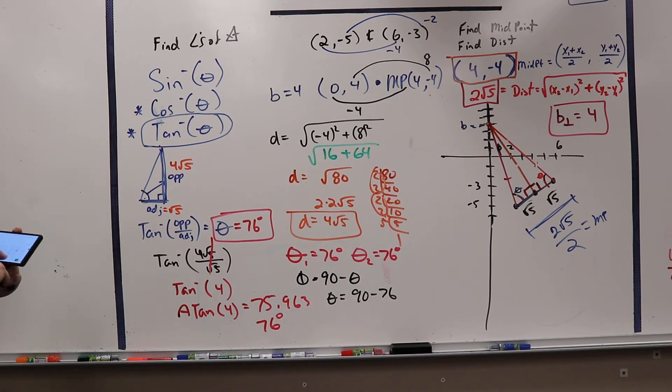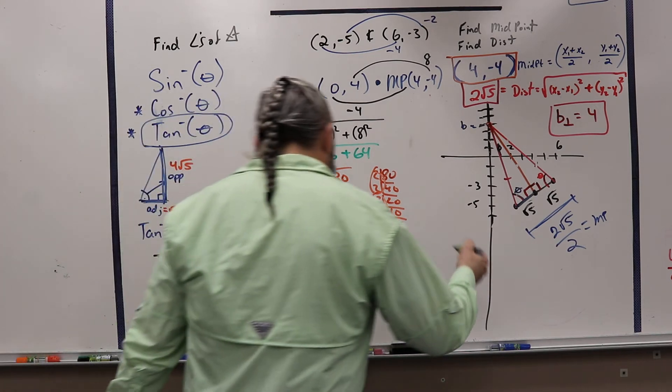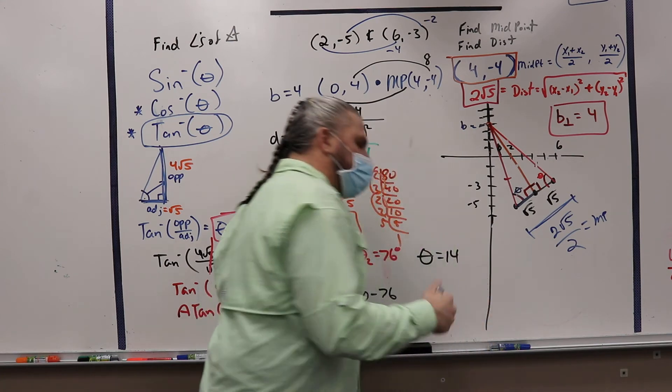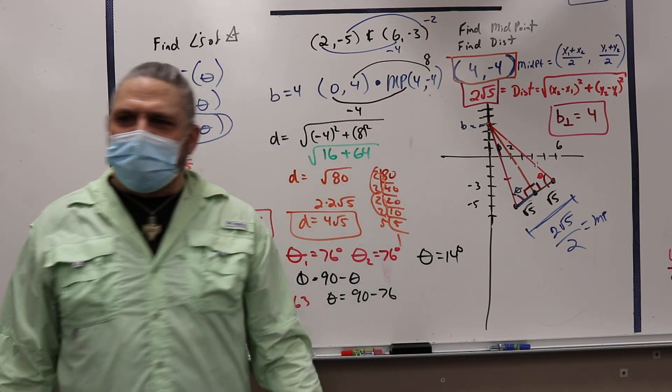So then I take 90 minus 76, and I get 14. So am I done now? Yeah. Because phi is equal to 14. So those are the angles to my triangle.